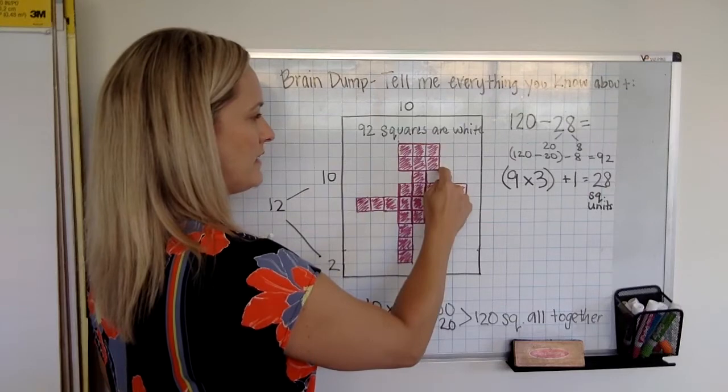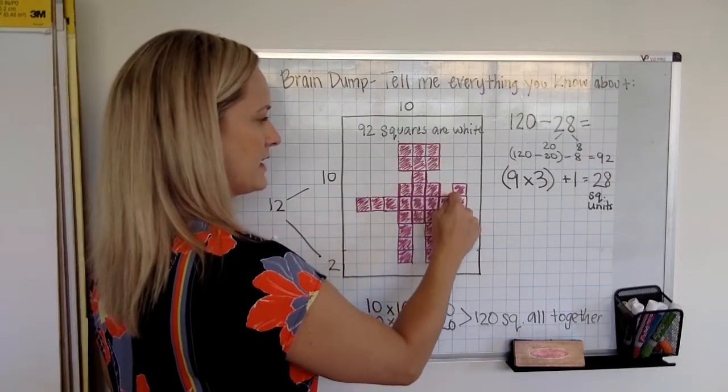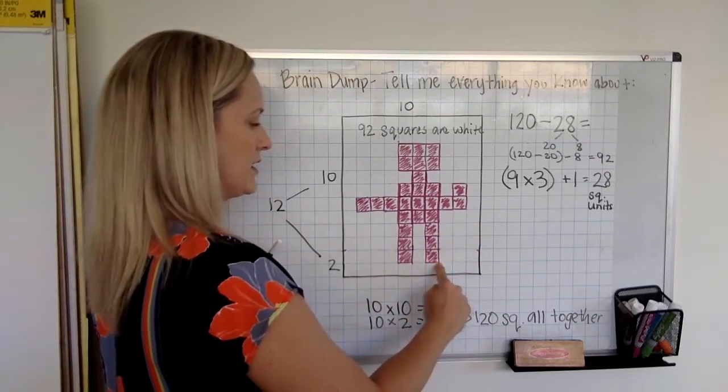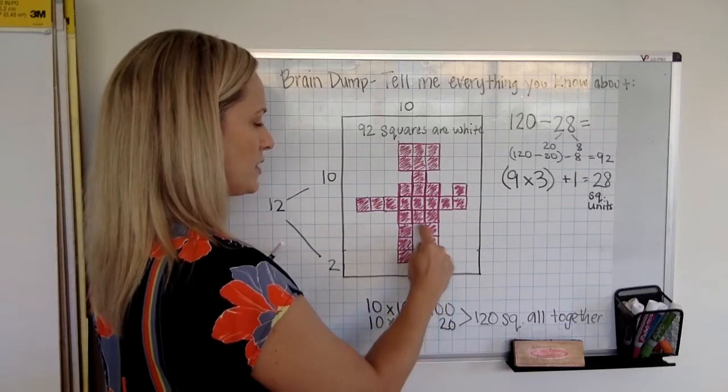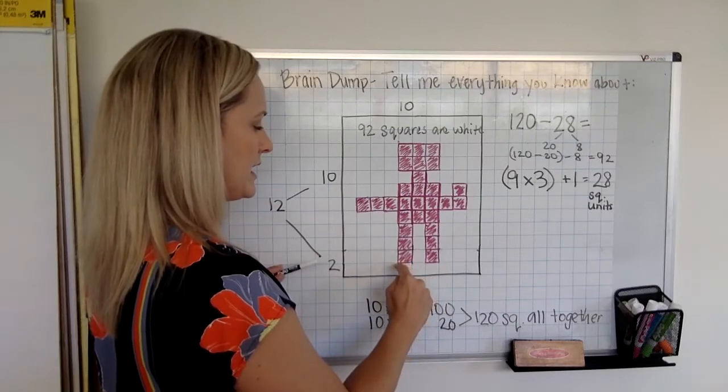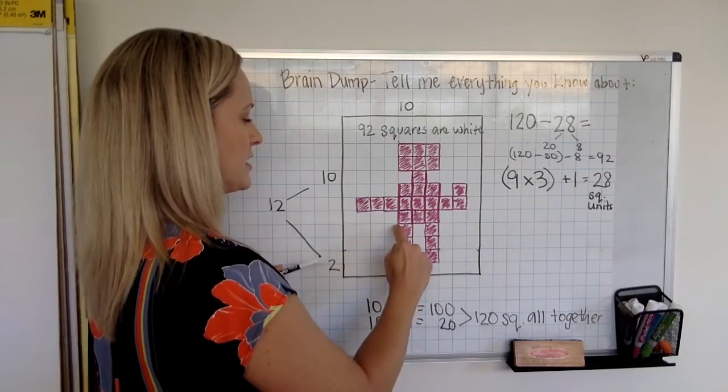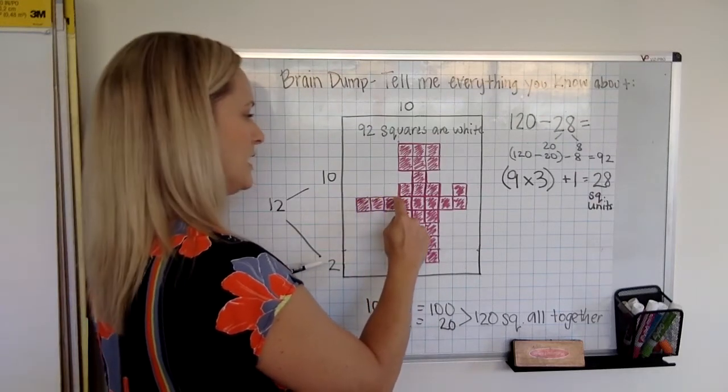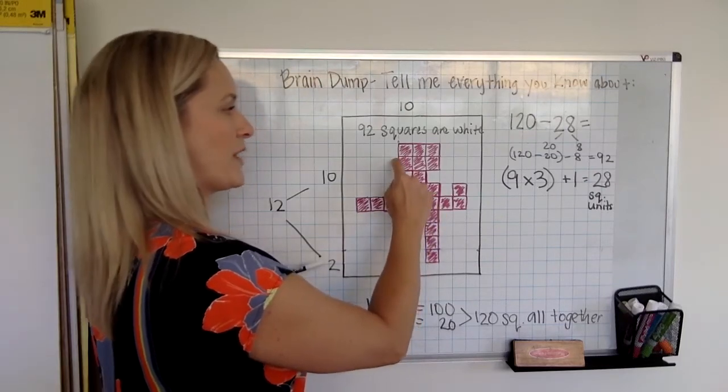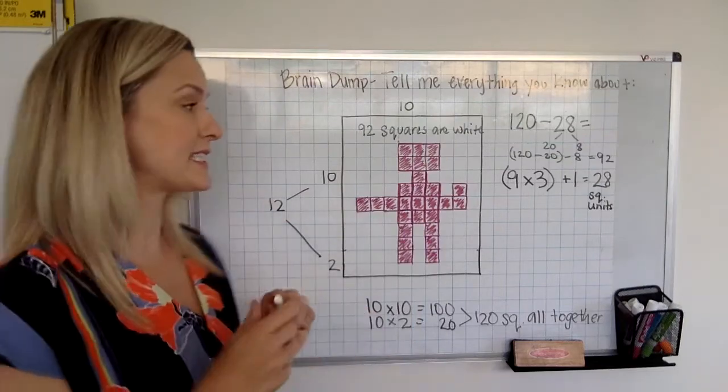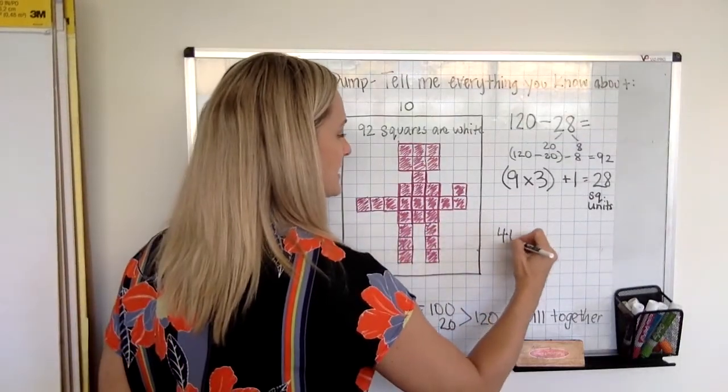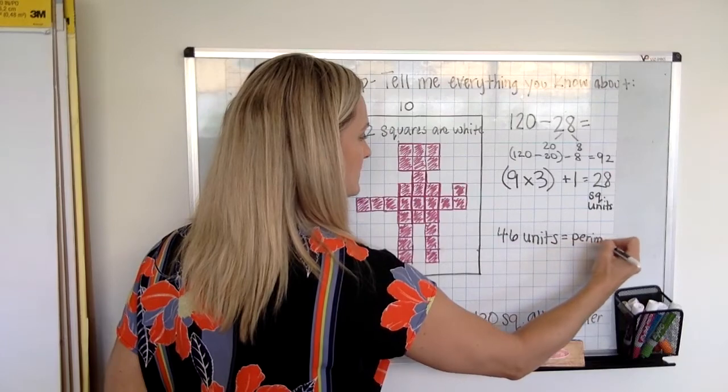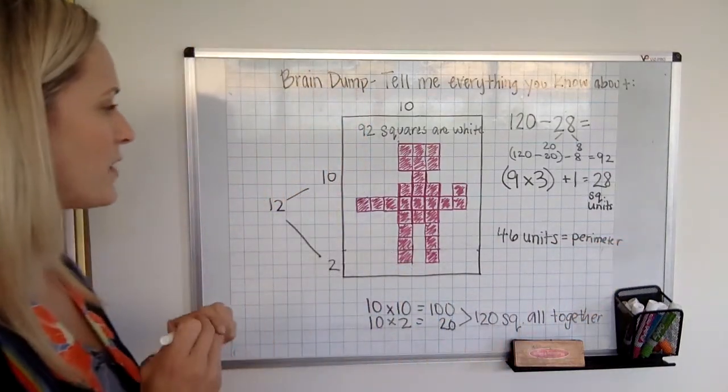1, 2, 3, 4, 5, 6, 7, 8, 9, 10, 11, 12, 13, 14, 15, 16, 17, 18, 19, 20, 21, 22, 23, 24, 25, 26, 27, 28, 29, 30, 31, 32, 33, 34, 35, 36, 37, 38, 39, 40, 41, 42, 43, 44, 45, 46. So there were 46 units for the perimeter.